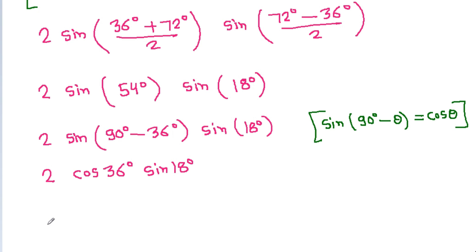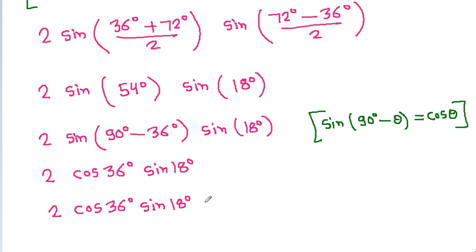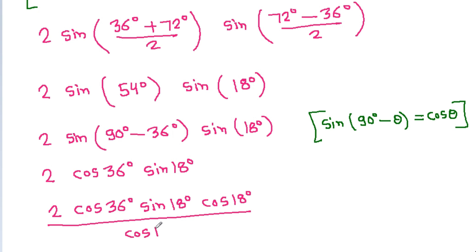Next, we multiply and divide by cos 18 degrees to create a useful form: the expression becomes 2 times sin 18 degrees times cos 18 degrees times cos 36 degrees, divided by cos 18 degrees.